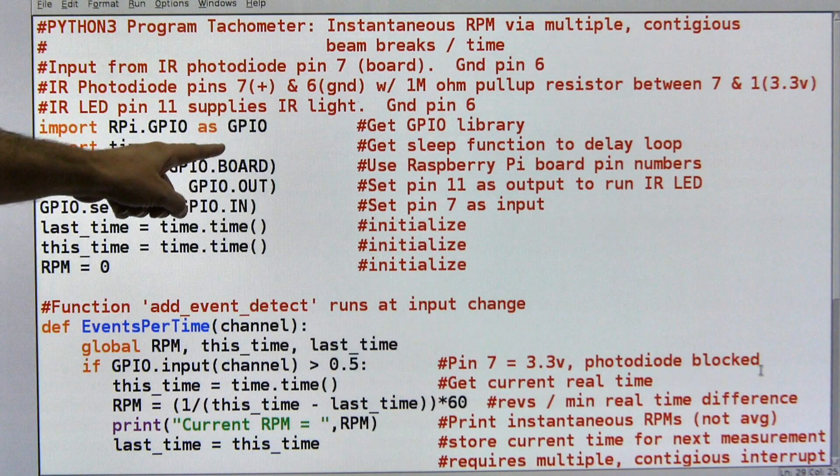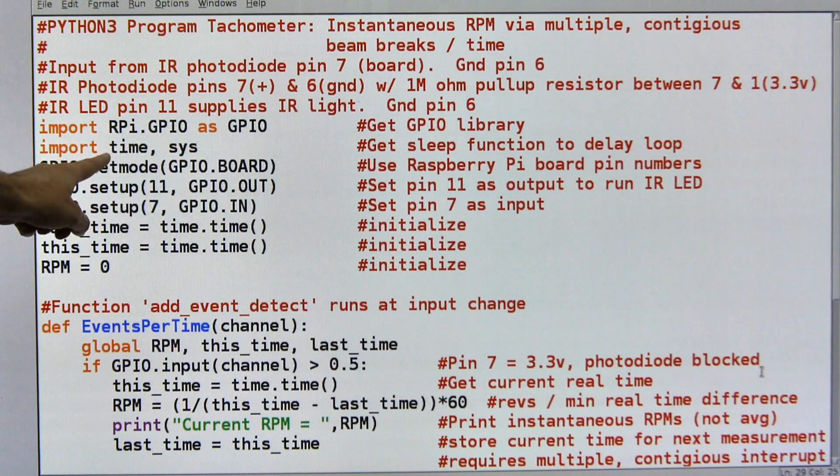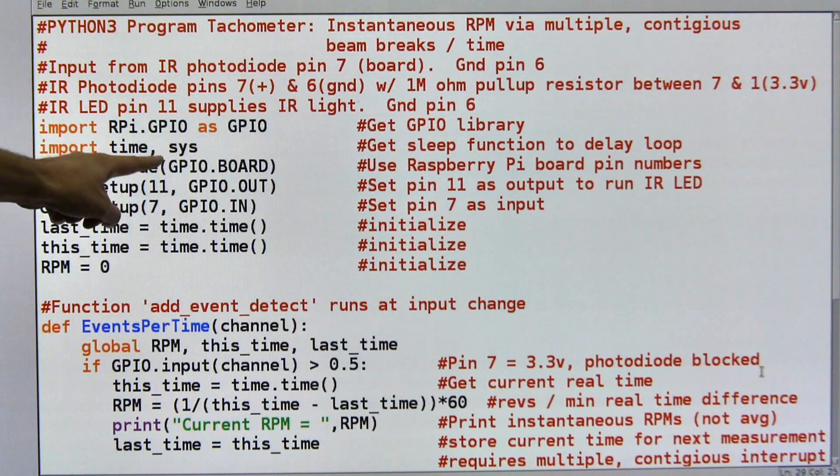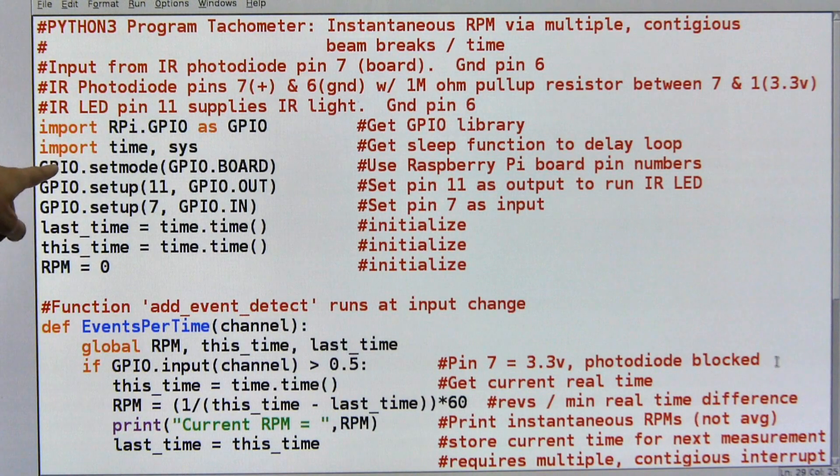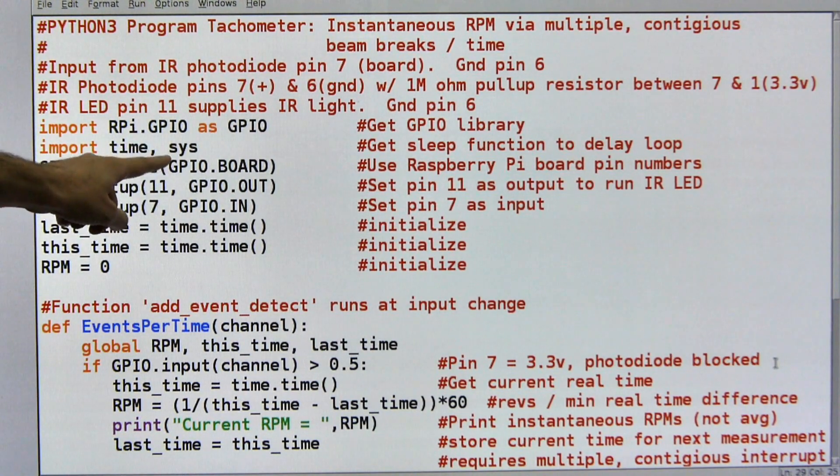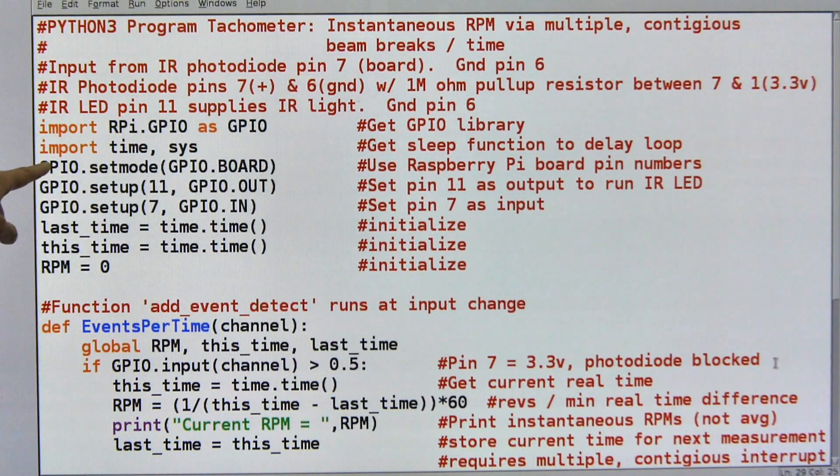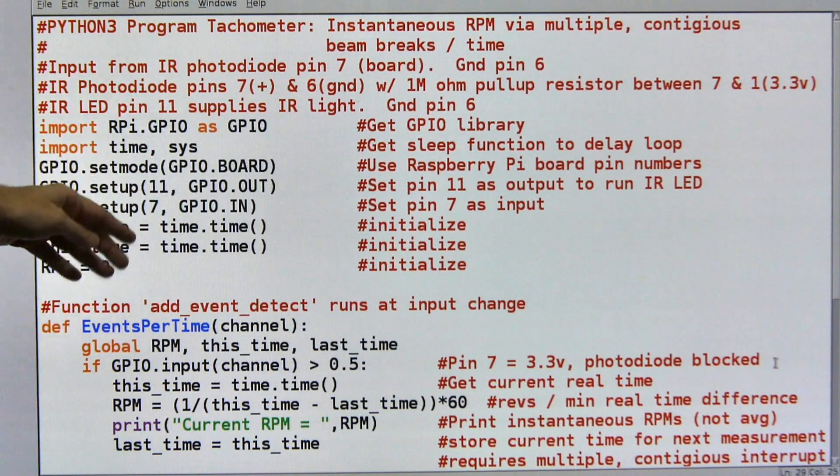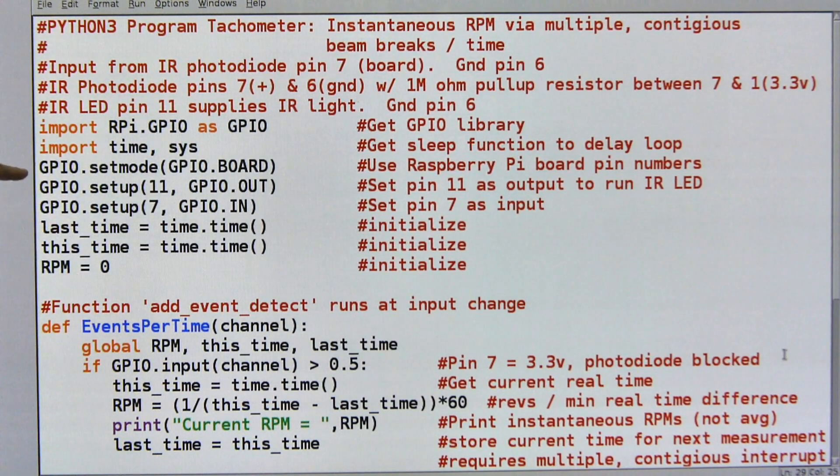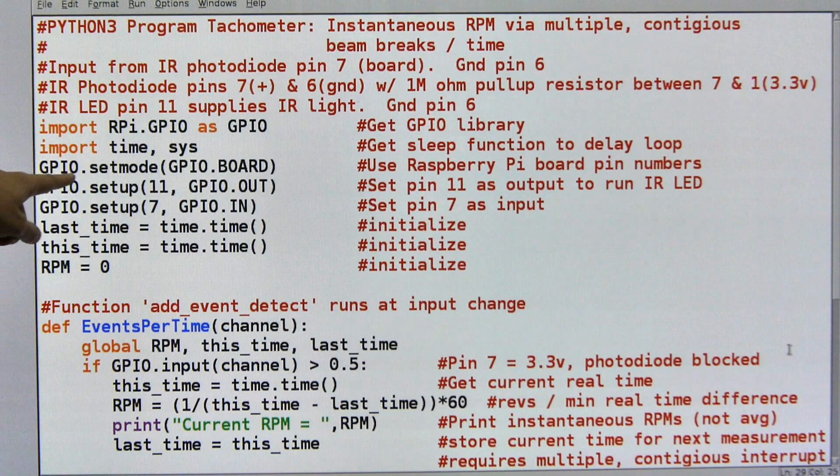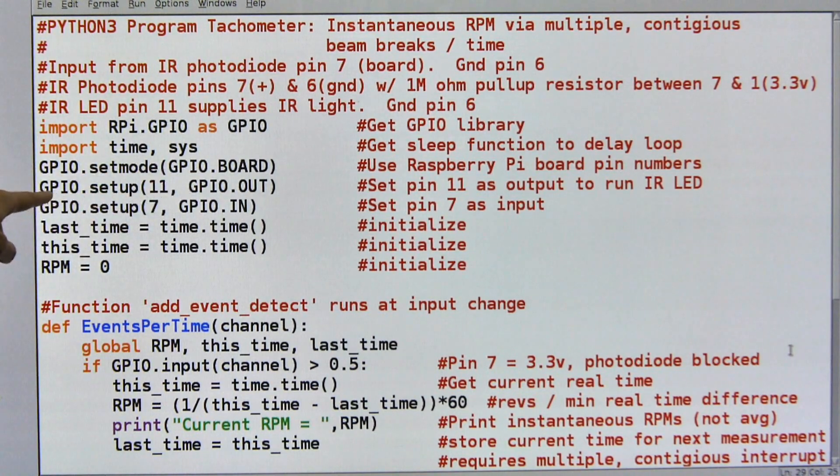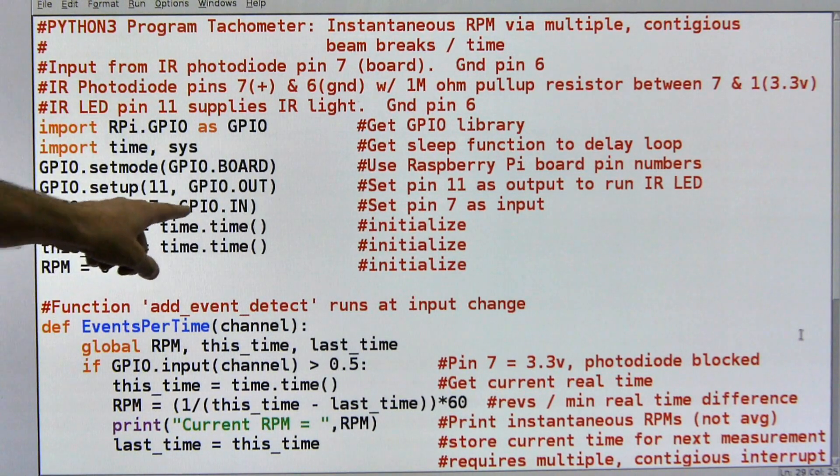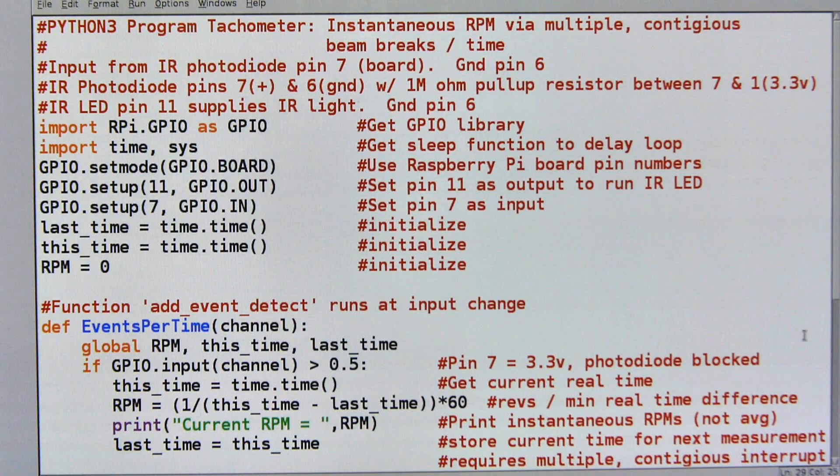I come down here, I import the GPIO as typical. I'm also importing the time and the sys functions. I was experimenting with some stuff and I left it in there, but I need the time for the timer and some other things. The GPIO I'm using the board numbering system. I'm going to use pin 11 as output which I've been doing and that's going to run the infrared LED. Pin 7 is going to be my input and that is the infrared photodiode.